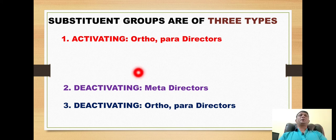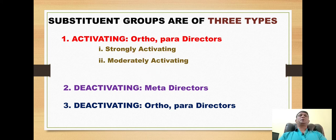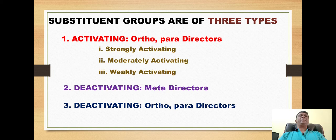The activating groups, which are ortho-para directors, are further sub-classified into three classes: number one is the strongly activating group, number two is the moderately activating group, and number three is the weakly activating group. Let's look at all these classes one by one.